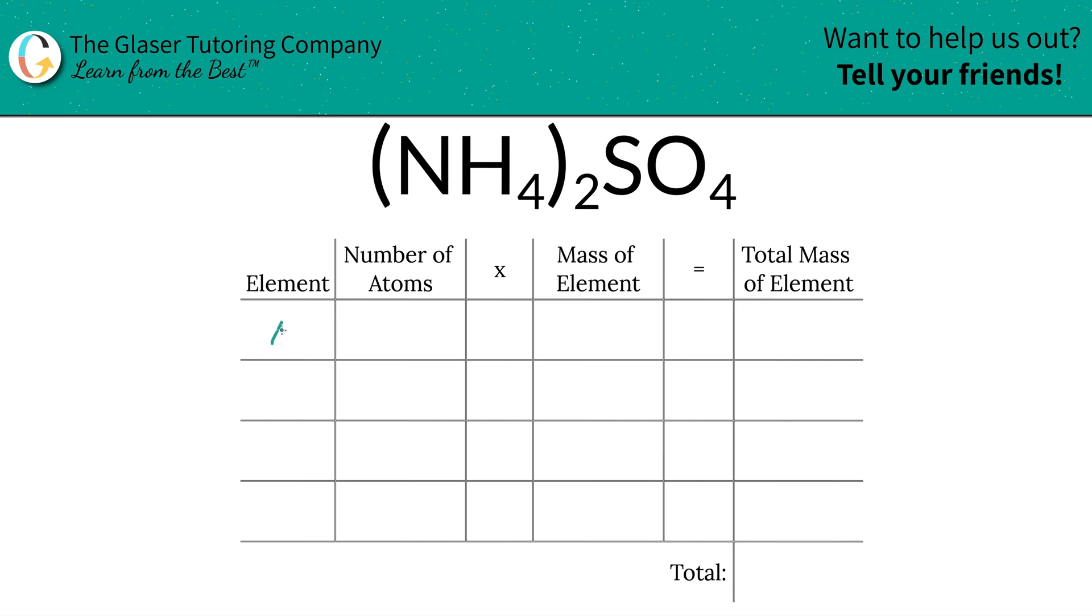The first step of the process is that we're going to write down the elements we see in the compound, so we've got nitrogen, hydrogen, sulfur, and oxygen. Then we've got to identify the number of atoms of each, and that's where the subscripts come into play. At the bottom of every element, you want to write in your subscripts if you don't see one.